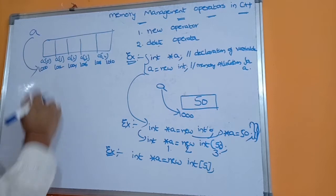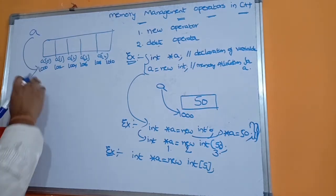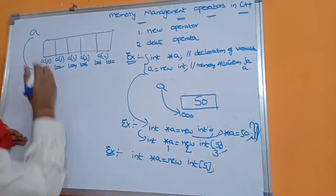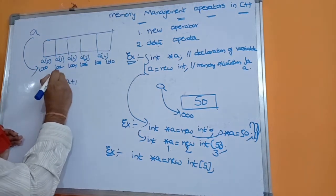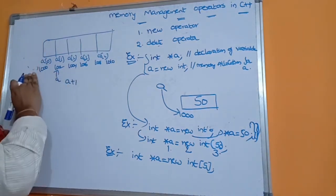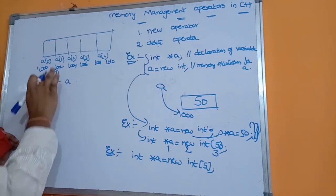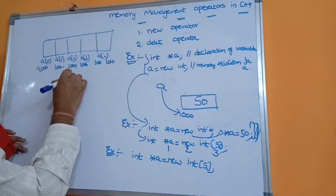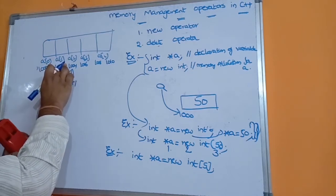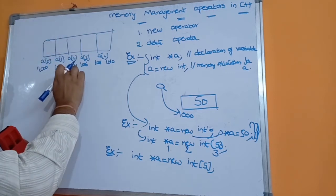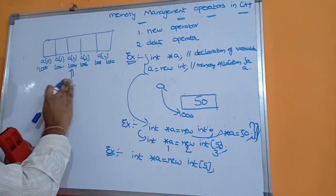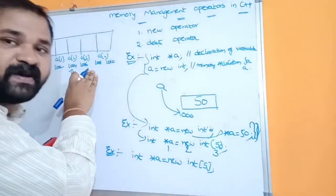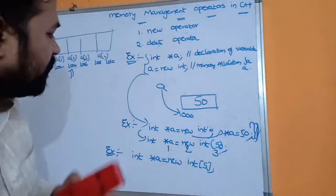Whenever a pointer variable is incremented, it points to the next memory location. If you perform a+1, then it points to 1002. If a is at 1002 and you perform a+1, the next memory location is 1004, not 1003. So a will point to the 1004 memory location, and like that we can perform the operations.